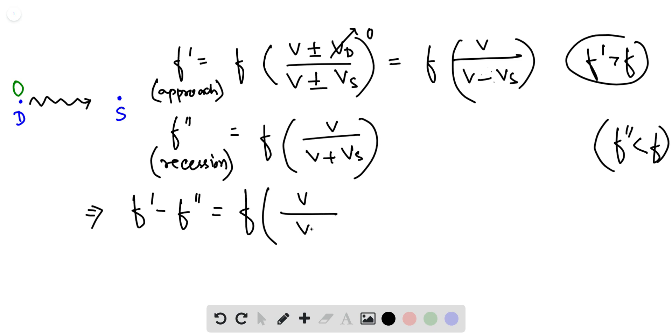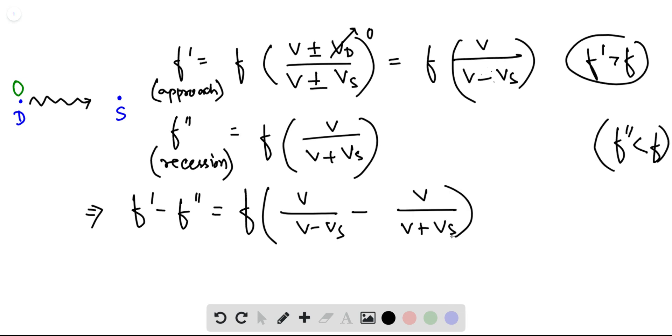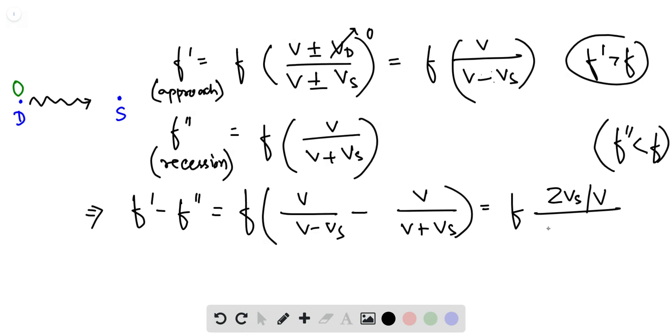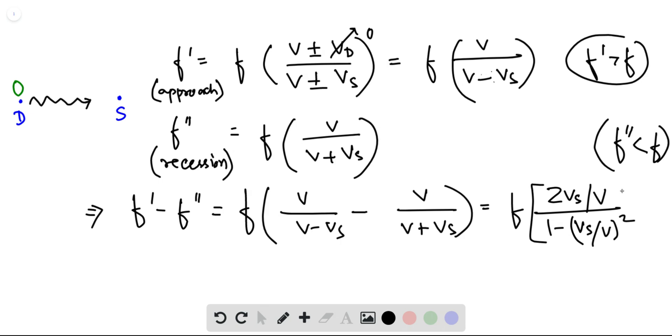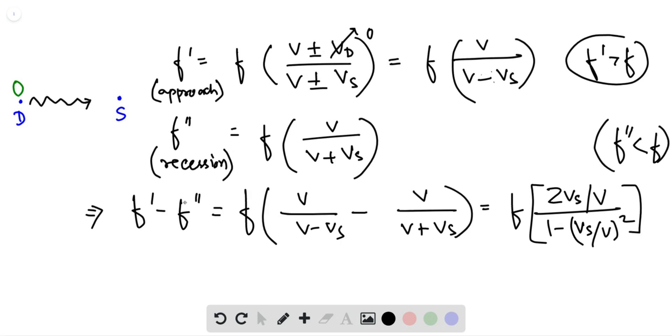V over V minus V_s minus V over V plus V_s. And this gives this expression to be 2V_s*V over V squared minus V_s squared. You don't need to do this, but yeah.